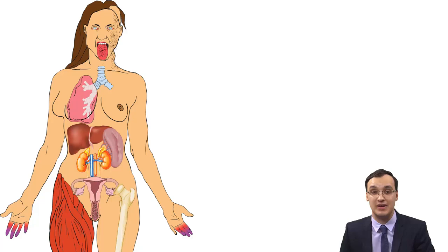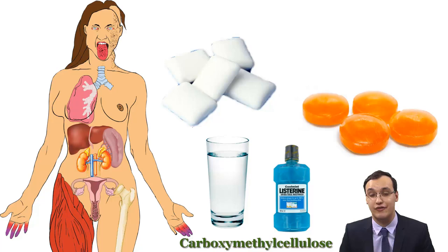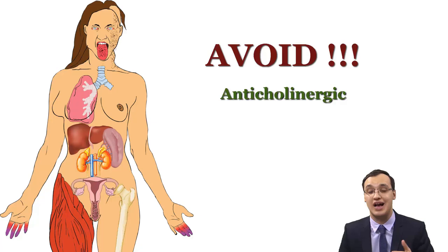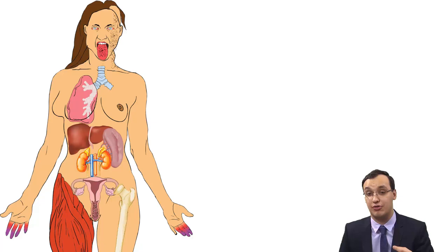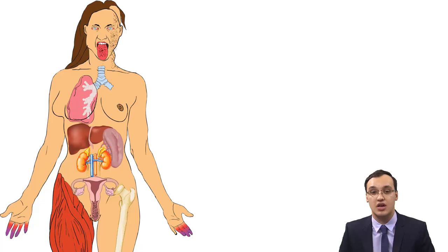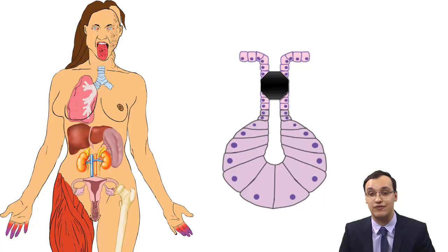Treatment for dry mouth includes drinking water daily to help with swallowing. We can stimulate the salivary glands locally with sugar-free gum, lozenges, or mouthwash containing carboxymethylcellulose, or systemically with pilocarpine or cevimeline. We should avoid drugs that decrease salivary secretion like anticholinergics, antidepressants, or antihistamines. Patients also have tooth decay, which can be prevented by regular dental visits, topical fluoride application, and good oral hygiene. Secondary candida infections are treated with topical nystatin lozenges or clotrimazole. Salivary duct stones must be removed to preserve salivary tissue.